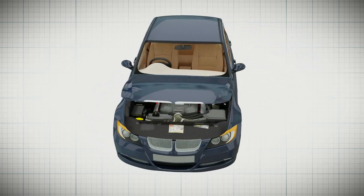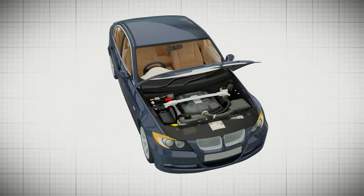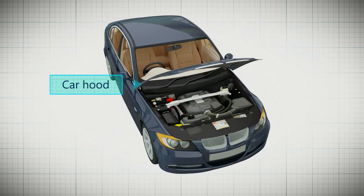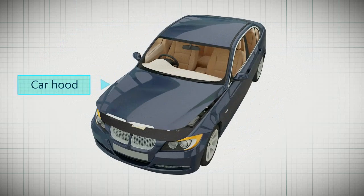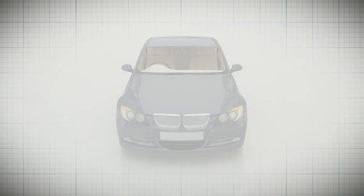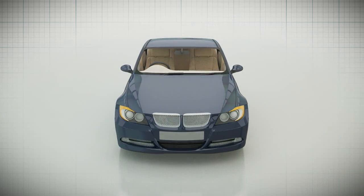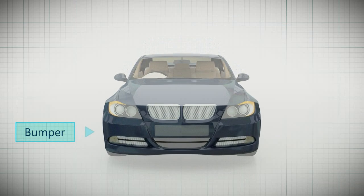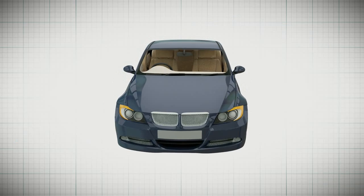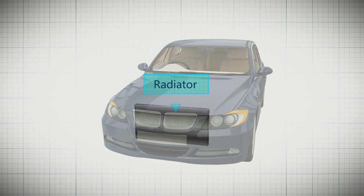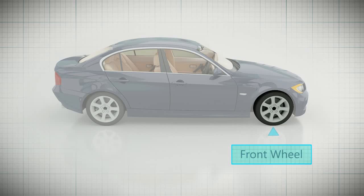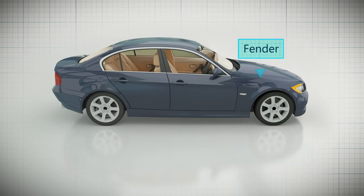Looking at the car from the front, we see the car hood. The hood is openable and houses the majority of the car's functional parts. Below the hood is the bumper that protects the car during a collision. There is a radiator under the hood of the car. On both sides are the front wheels and above each wheel is a fender.